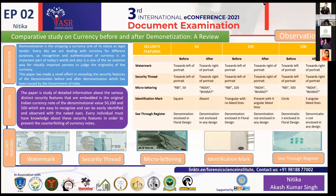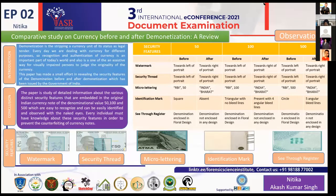Security features include integral printing, optical variable ink, watermarks, and others. In this paper, we considered five security features: watermark, security thread, micro lettering, identification mark, and see-through register. In the 50 rupee note, before demonetization, the watermark was located toward the left side of Mahatma Gandhi's portrait.